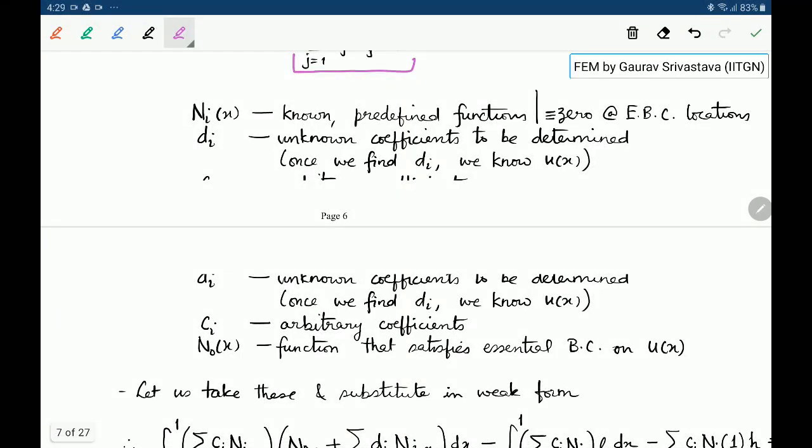Just to reiterate, Nᵢ of X are known predefined functions and these are 0 wherever essential boundary conditions are specified.